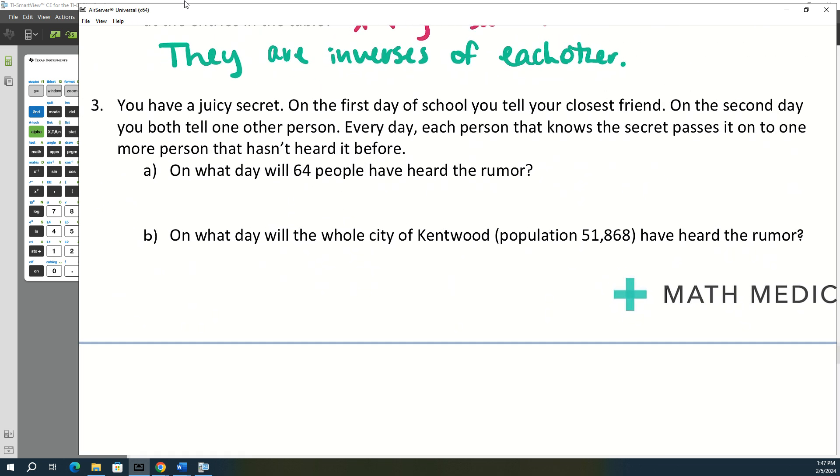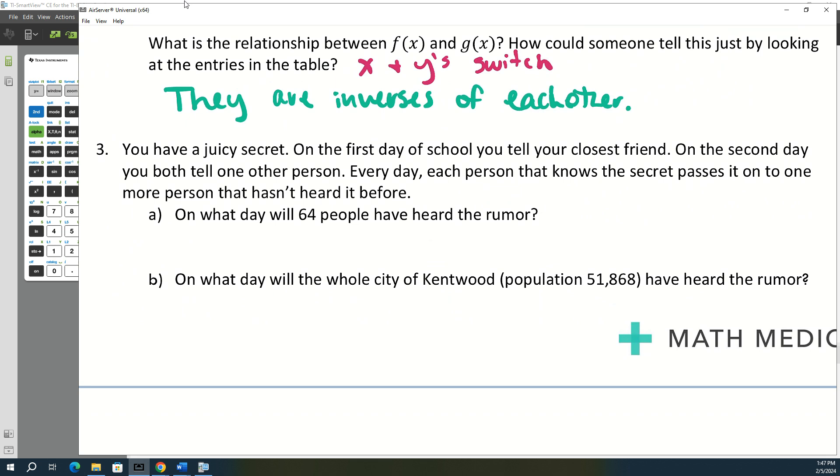All right. So number three. You have a juicy secret. On the first day of school, you tell your closest friend. On the second day, you both tell another person. Every day, each person that knows the secret passes it on to one more person that hasn't heard. So A says, on one day, will 64 people have heard the rumor? All right.